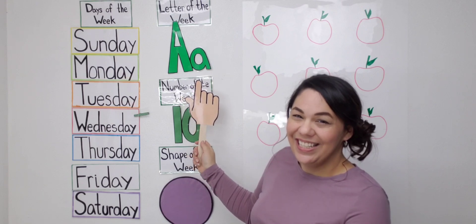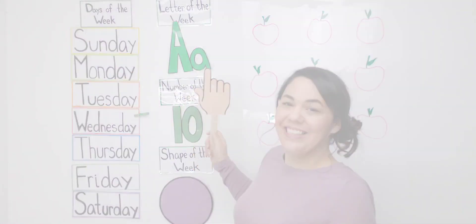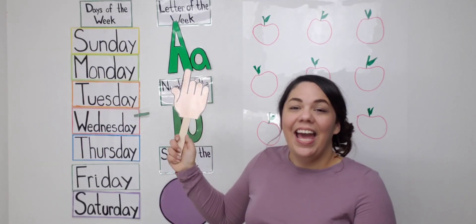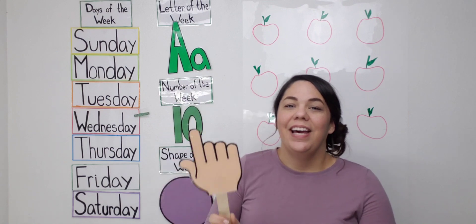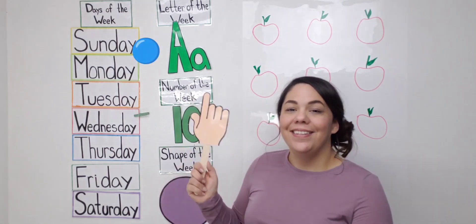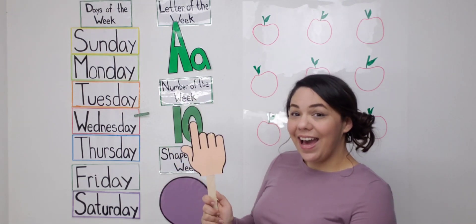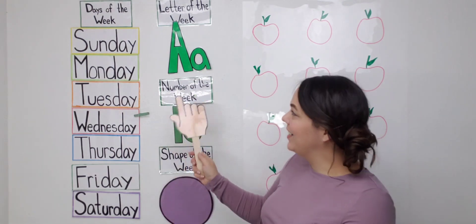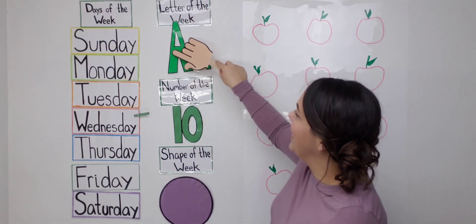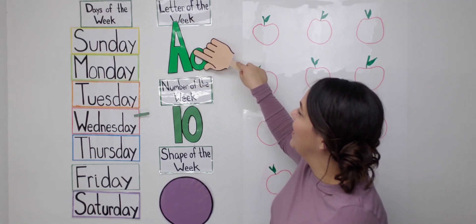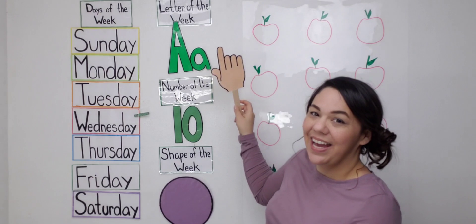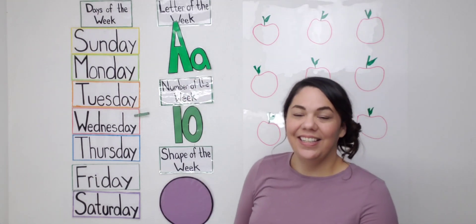We need our handy dandy pointer so that we can review our board. Ready? The letter of the week is A. Every letter makes a sound. A says A. Good job. This is uppercase A and lowercase A.